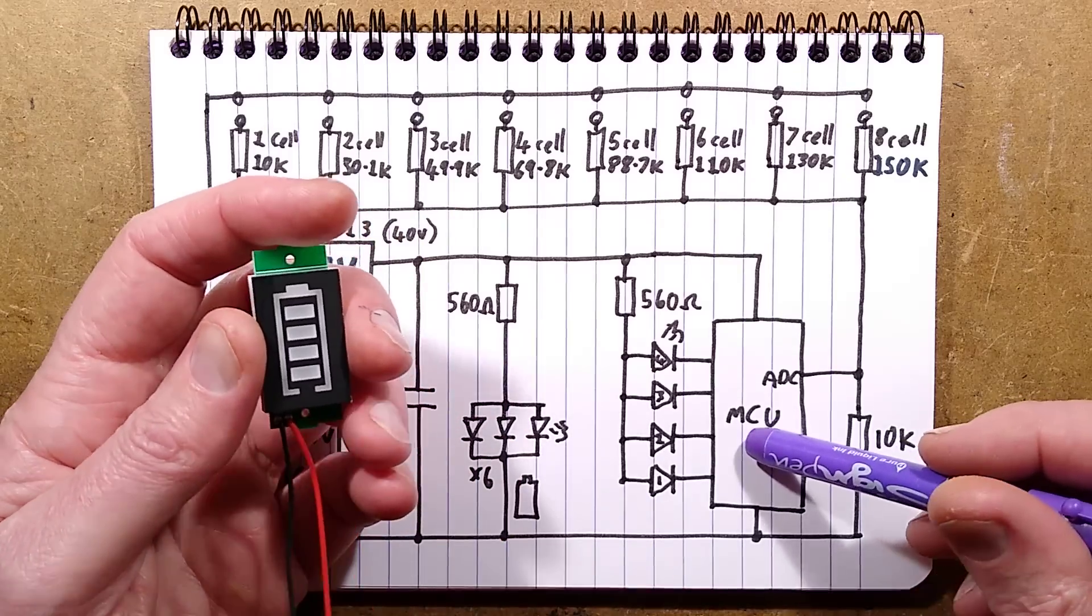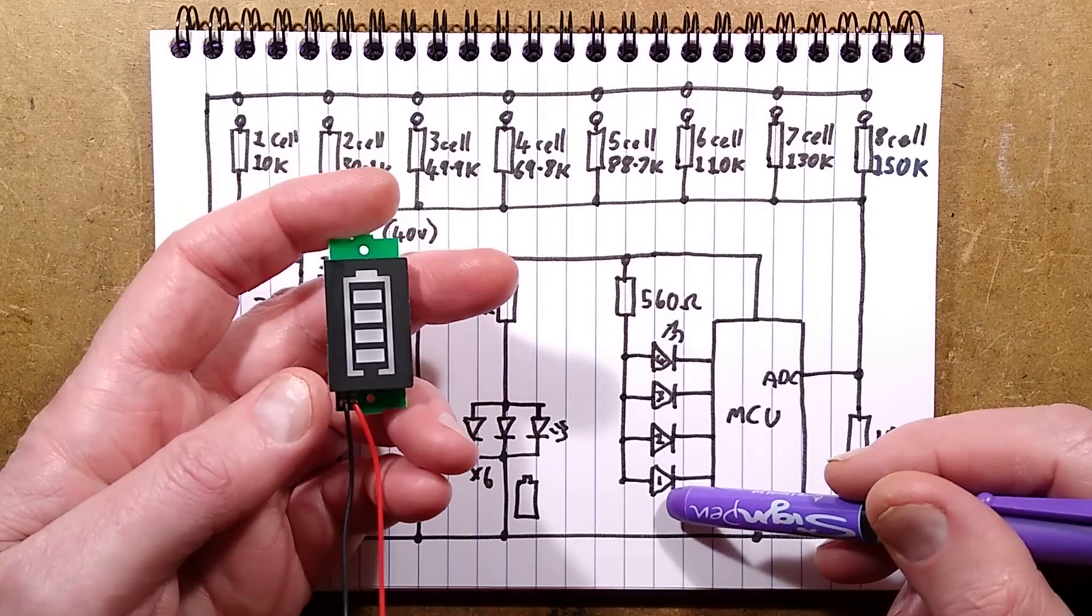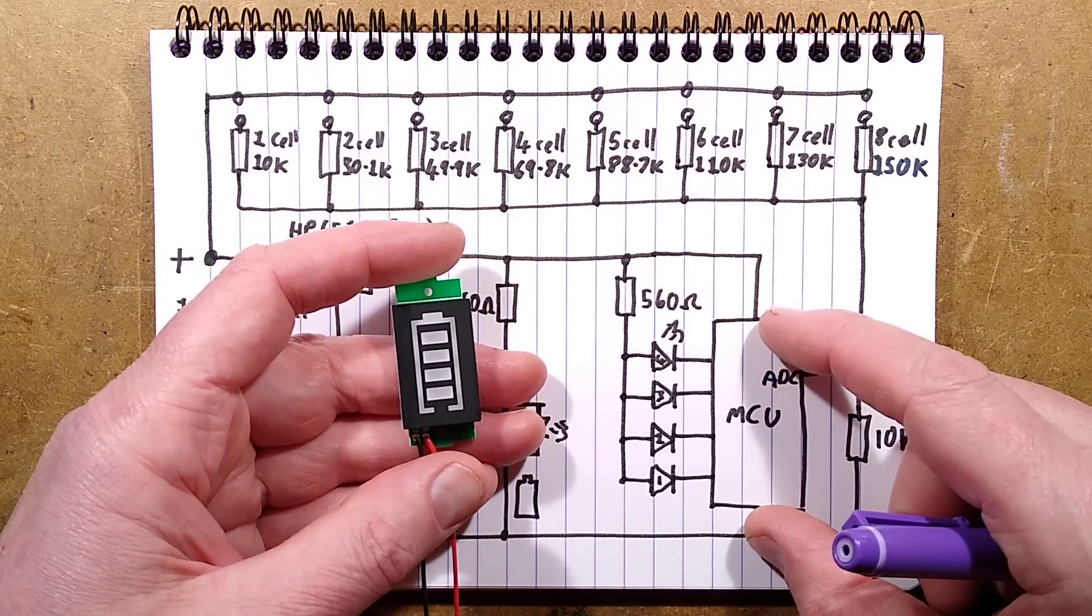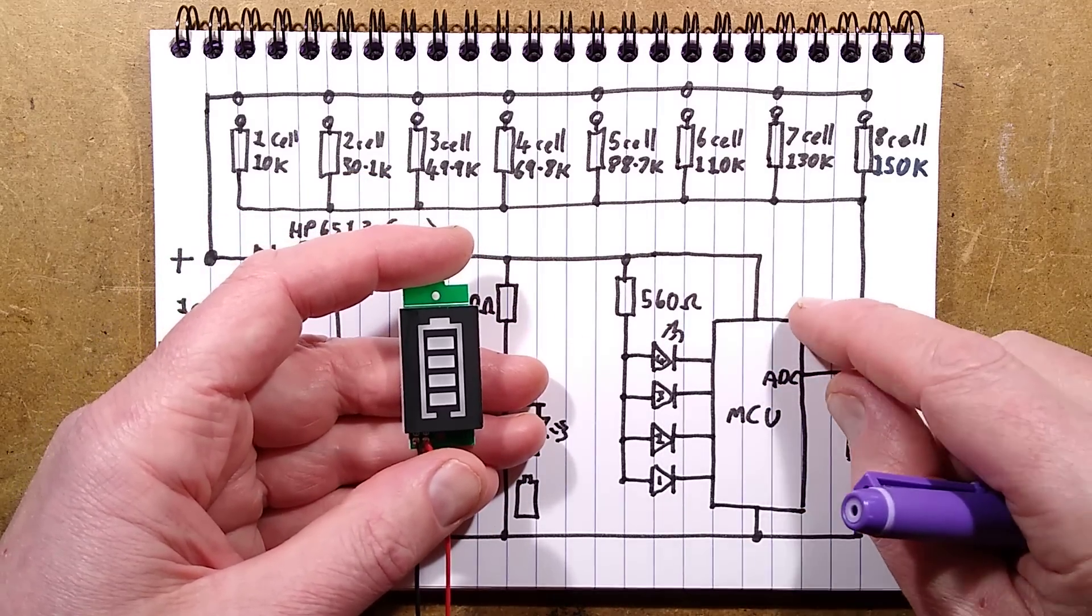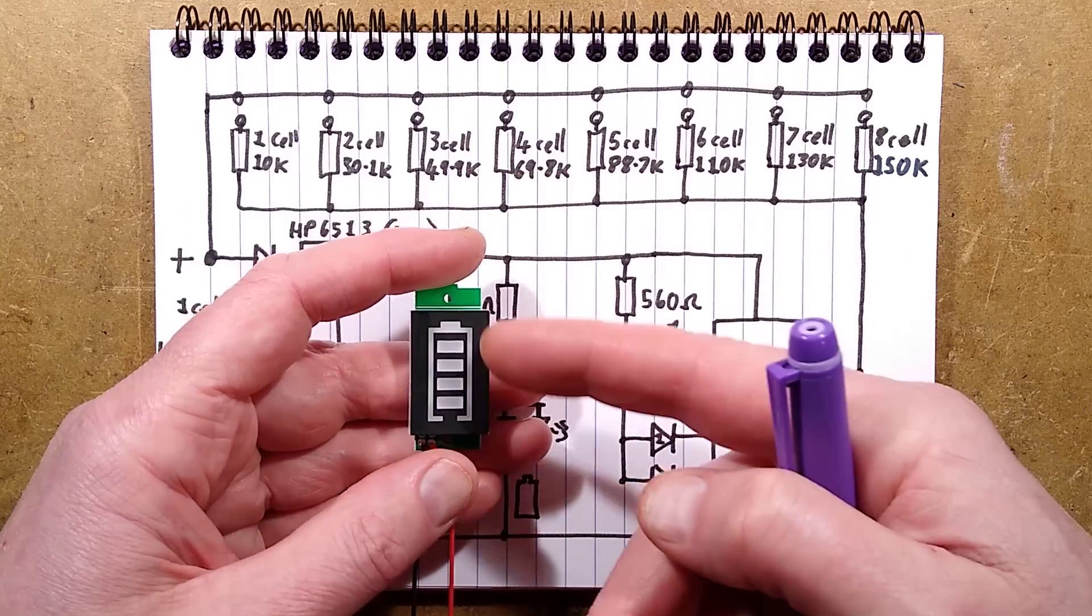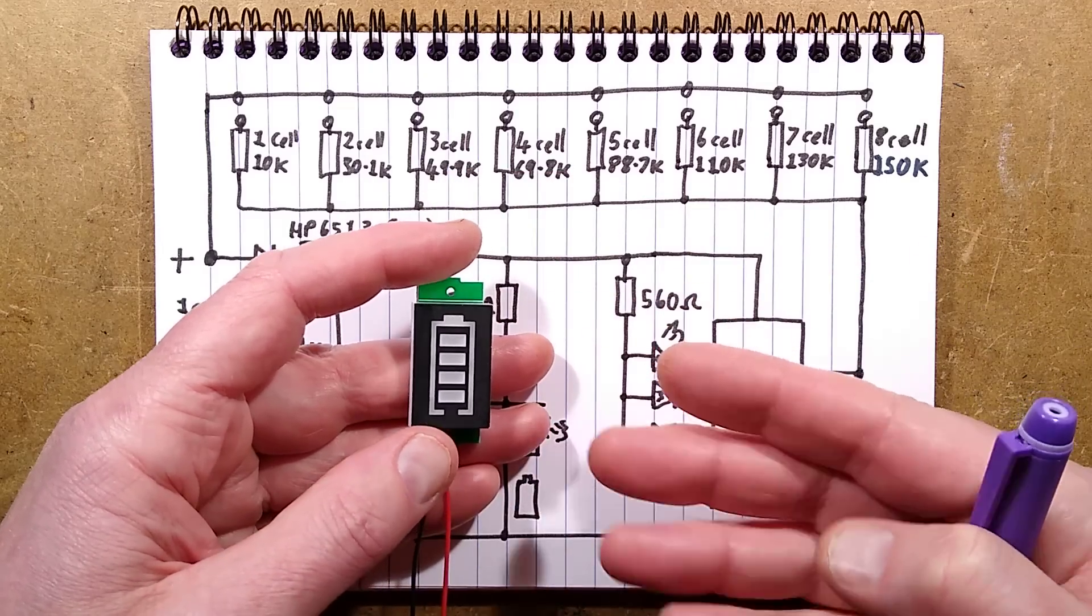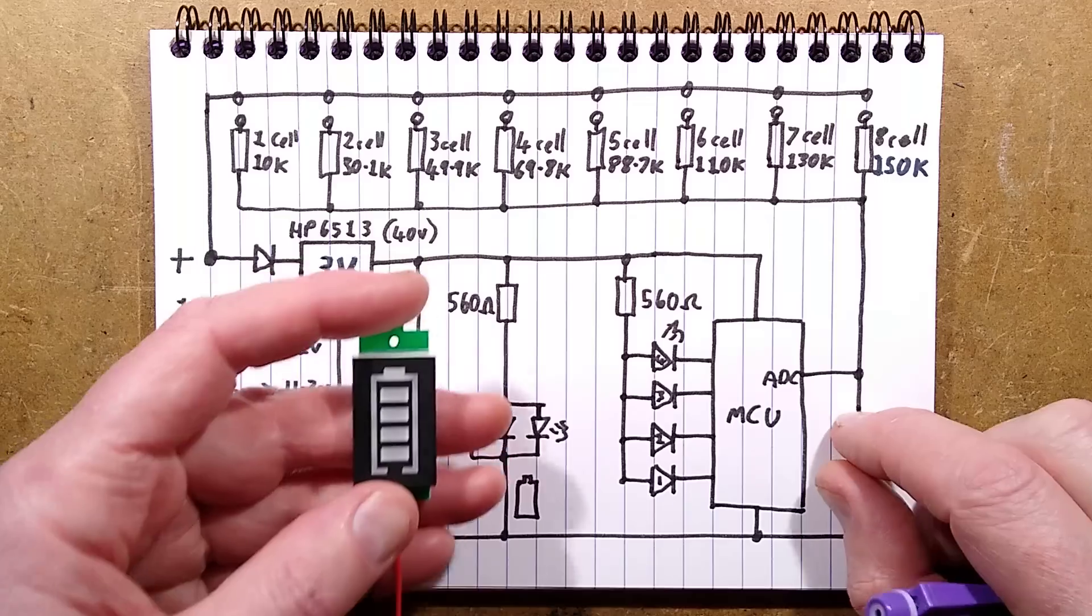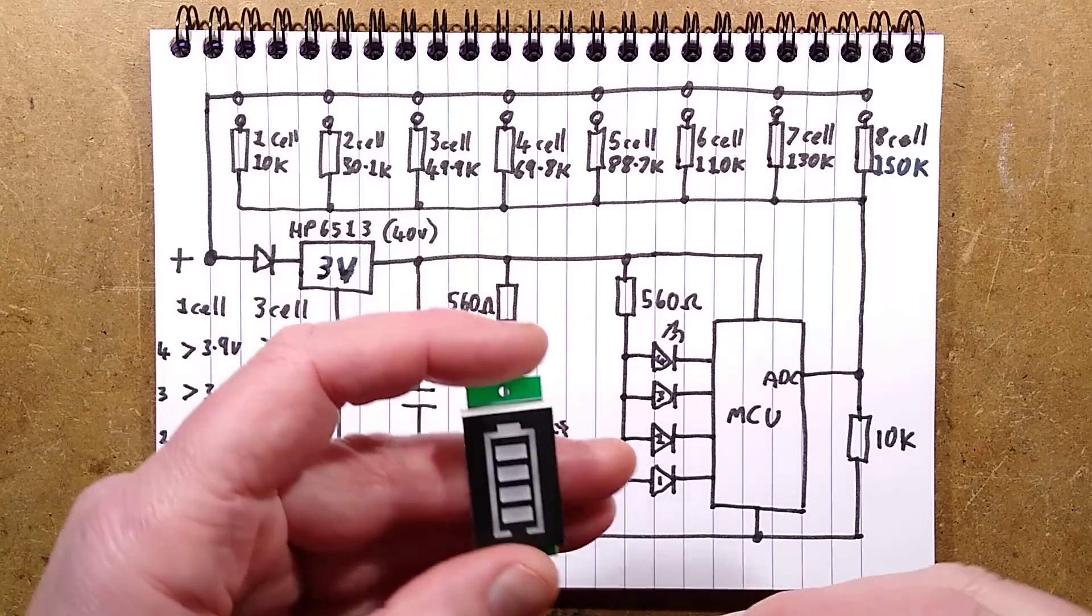What they could have done is as the voltage increased it was one two three four until all the LEDs are lit. What it could have done if the voltage kept increasing and it went above the programmed voltage thresholds by a significant degree, it could start flashing the display to actually tell you the battery was potentially being overcharged. That could have been a useful feature.